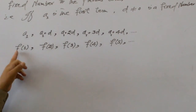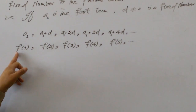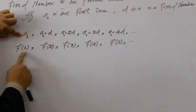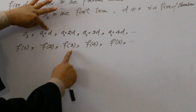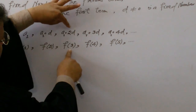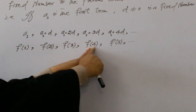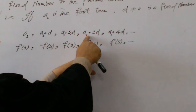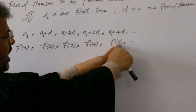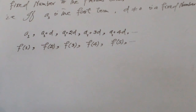There is a function when we substitute the natural numbers: the first term is number 1 and F(1) equals A1. The value of F(2) is equal to A1 plus D. The value of F(3) is equal to A1 plus 2D. The value of F(4) is equal to A1 plus 3D.